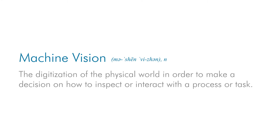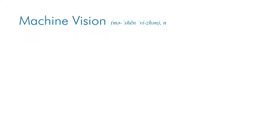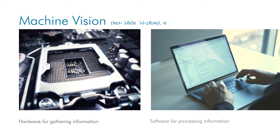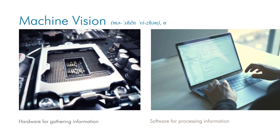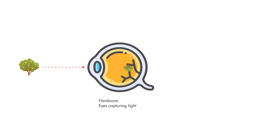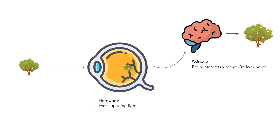A common misconception is that machine vision is simply attaching a camera to a machine and getting back photos or videos of what that machine sees. While in certain applications this may be desirable, machine vision can be generalized more broadly. Here at Hermory, we define machine vision as the digitization of the physical world in order to make a decision on how to inspect or interact with a process or task. This typically involves hardware to gather information and software to process this information. This is analogous to the way our eyes capture light from the world and our brain determines what we are looking at.